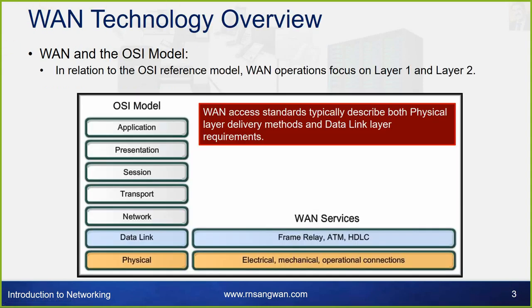WAN Technology Overview. In relation to the OSI Reference Model, WAN operations focus on Layer 1 and Layer 2 — the Physical and Data Link layers. WAN standards typically describe both the physical delivery method and the data link layer requirements.